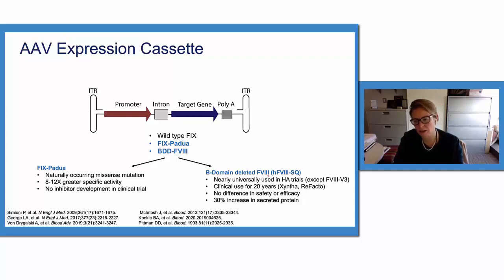These B domain deleted Factor VIII or Factor VIII SQ confers increased mRNA and ultimately a modest increase in secreted protein, at least in recombinant cell line production.